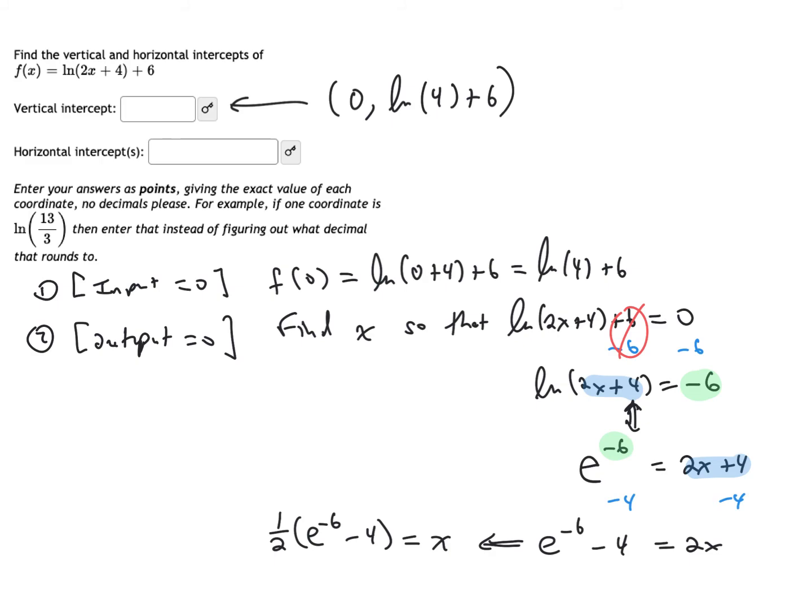So that is the input for which the output is zero, meaning that my horizontal intercept is going to have first coordinate one-half e to the minus six minus four, and second coordinate zero.